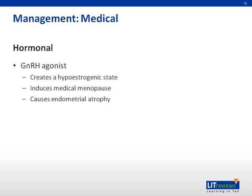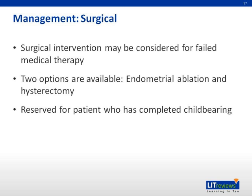The use of GnRH agonists is to create a hypoestrogenic state and cause medical menopause. A useful application of GnRH agonists in managing DUB is to suppress endometrial growth before endometrial ablation. Surgical intervention may be required for patients who have not responded to medical therapy. The options include endometrial ablation and hysterectomy, with the caveat that the patient should have completed their family.